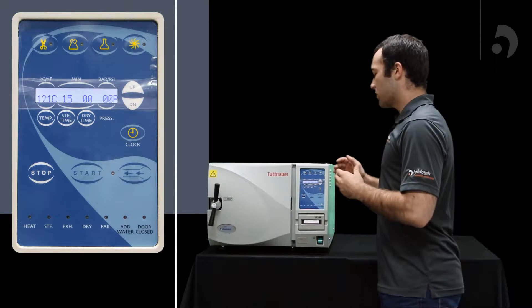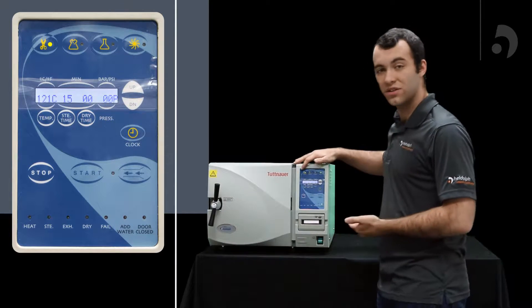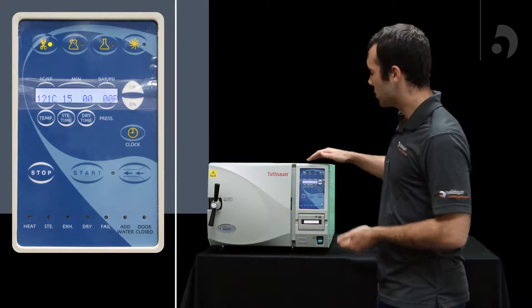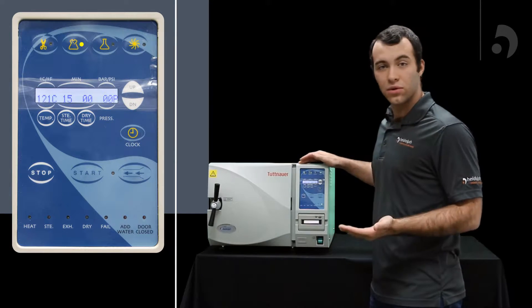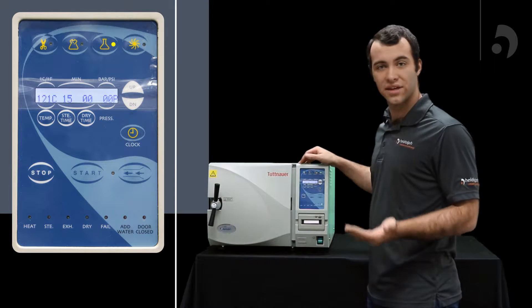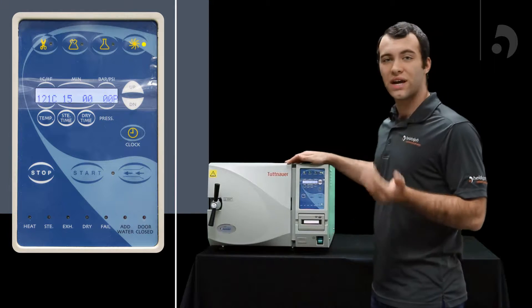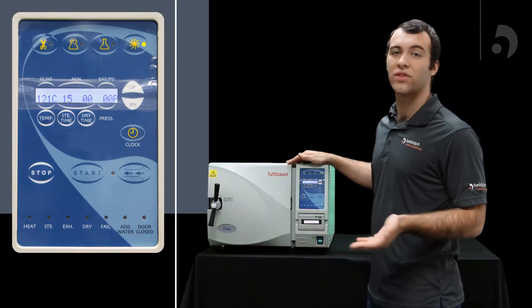The first thing we've got on our panel is our four cycles. We've got our instrument cycle, which is for sterilizing your lab tools. We've got our wrap cycle for sterilizing your wrap instruments. We've got our glass cycle for sterilizing any glassware, and we've got a dry cycle in case you want to dry something without sterilizing it.